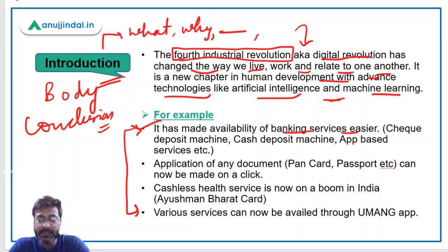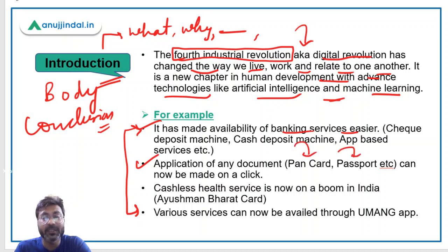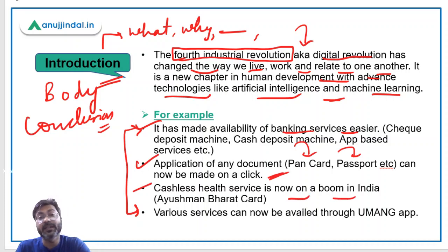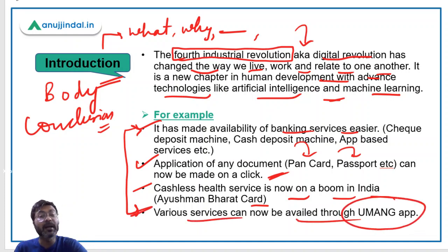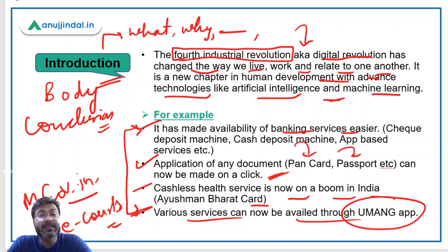If you don't want to go to the branch, you can avail all services through the app. Number two: application for any document — be it PAN Card, Passport, or Aadhar Card — you can apply online. Number three: cashless health services are now booming in India; for example, with the Ayushman Bharat Card we can avail cashless health services. Also, various other services can be availed through the Umang app, my gov.in, and e-courts — there are many examples to justify that digital revolution is making our lives easier.